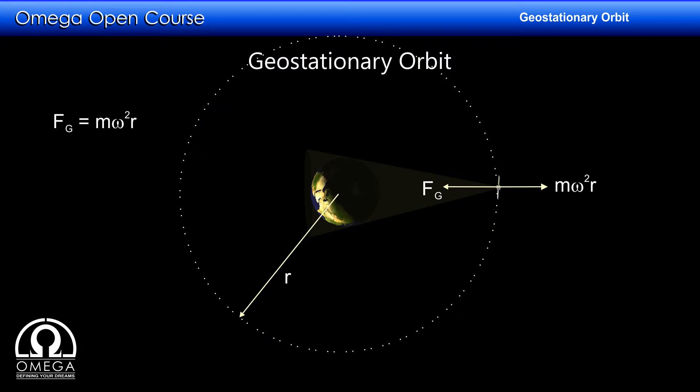This centrifugal force must be balanced by the gravity. Therefore, G capital M times m by r square must equal m omega square r, where capital M is the mass of the Earth. This implies r cubed equals GM by omega square, or r equals the cube root of GM by omega square.